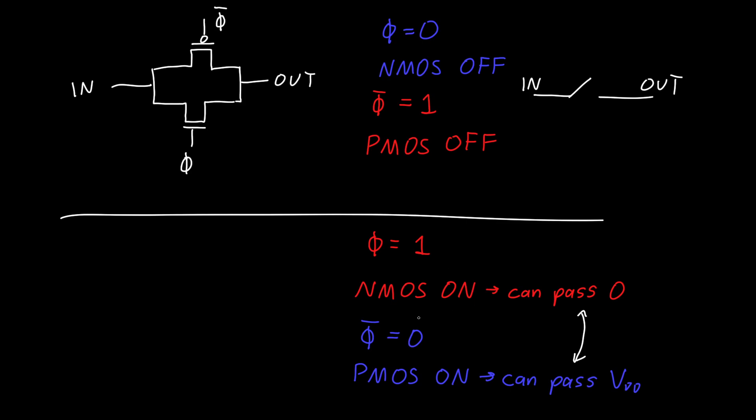But regardless of which one is on, we're able to connect the input to the output. So regardless of whether the input is zero or one, VDD or zero volts, our input is able to make it to the output.